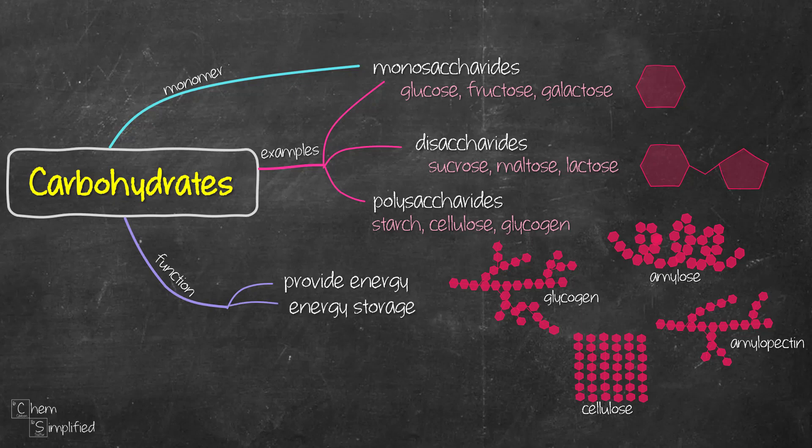Glucose energy is stored as glycogen in animals and starch in plants for later use. It's also used to build other macromolecules like ribose and deoxyribose which are the building blocks for RNA, DNA, and ATP. We'll talk about it later.